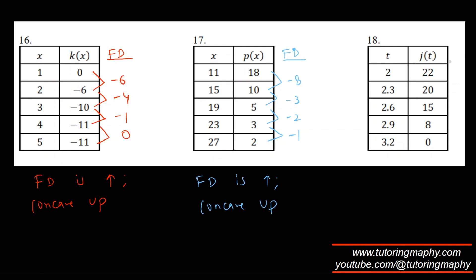For the final table: first differences are 20−2... actually −2, then 15−20 = −5, then −7, then −8. The numbers are getting more and more negative, so the first difference is decreasing. This means the function is concave down.